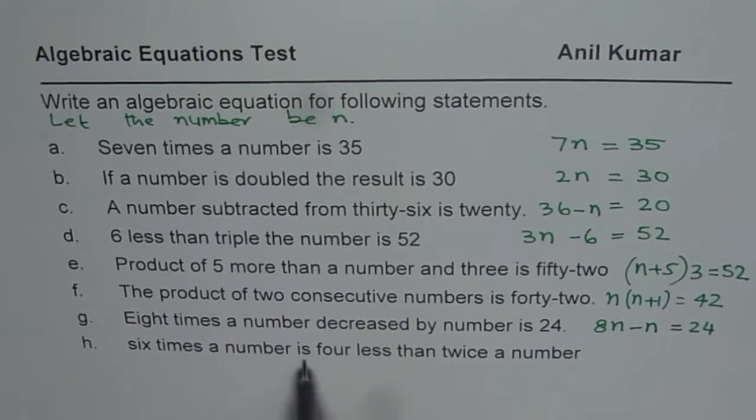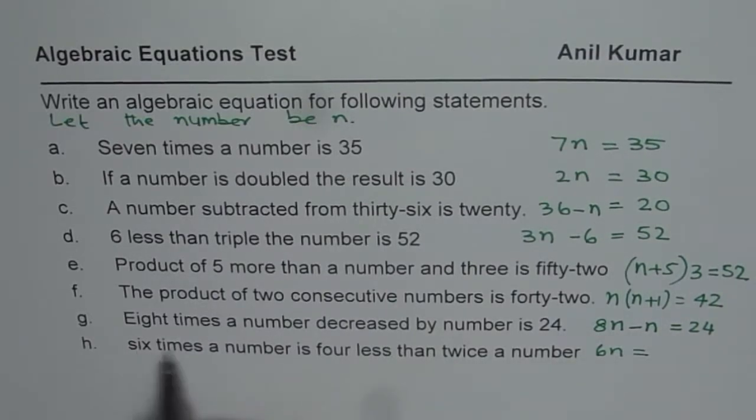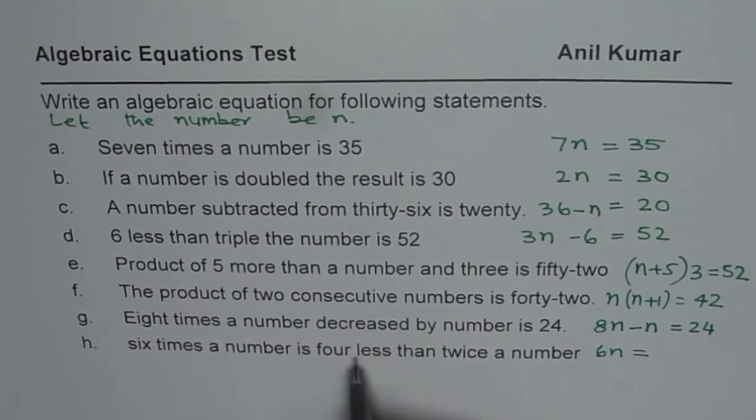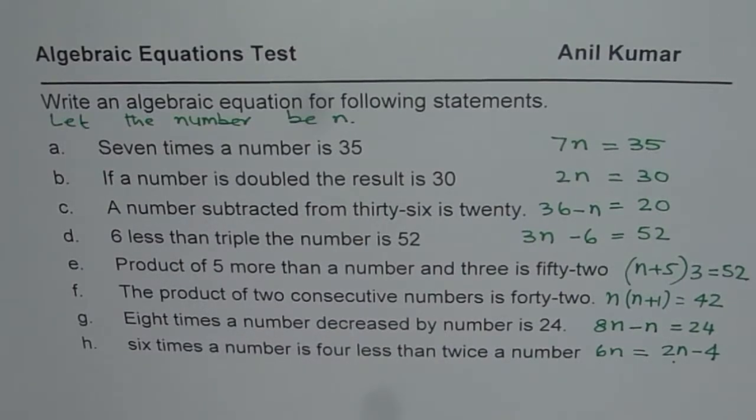6 times the number is 4 less than twice the number. So is is in between, 6 times the number, is means equal to, 6 times the number is 4 less than twice the number. So 2n minus 4, 4 less than twice the number. So that is how you get this equation.